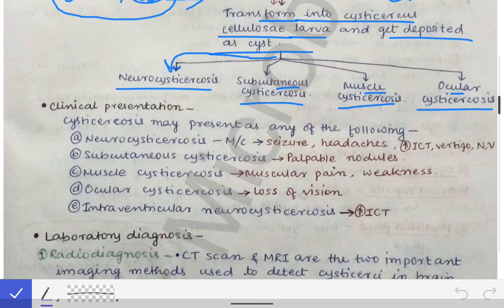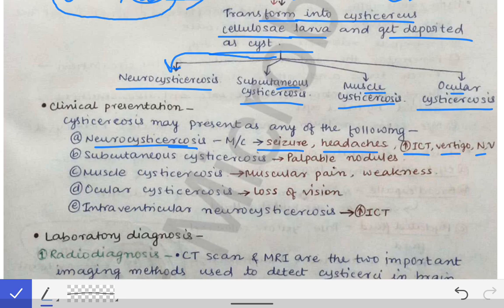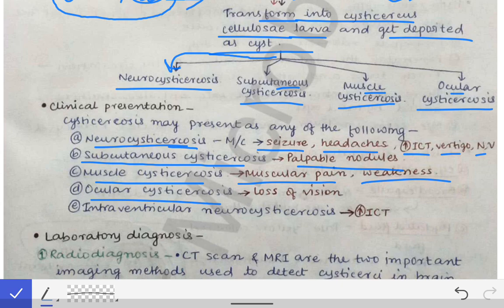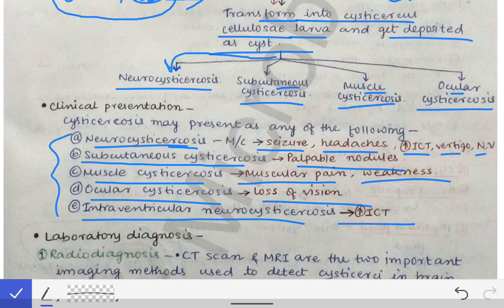Clinical presentation varies based on the site of cysticercosis. In neurocysticercosis: seizures, headaches, increased intracranial tension, vertigo, nausea, and vomiting. In subcutaneous cysticercosis: palpable nodules at the skin. In muscle cysticercosis: muscular pain and weakness. In ocular cysticercosis: loss of vision. If cysts involve the ventricles of the brain, there will be increased intracranial tension.